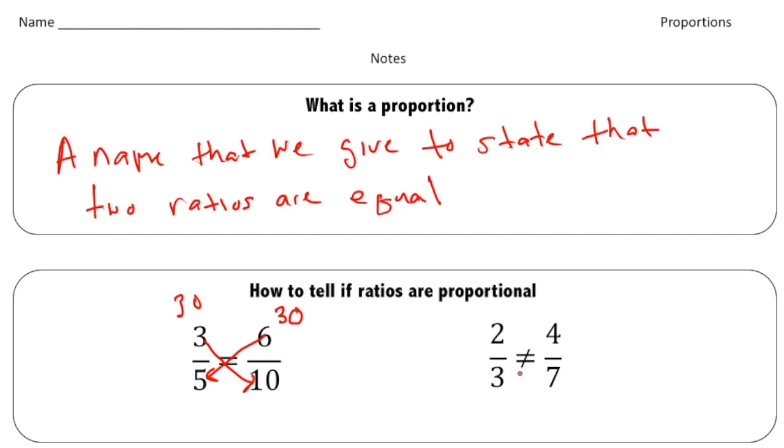Let me show you one where the fractions are not equal. If I try this method, if I do two times seven I get fourteen. Well if I do four times three that gives me twelve. And because twelve does not equal fourteen, I know that these fractions are not equal. This method is called the cross product method.